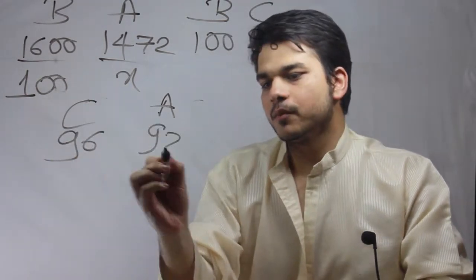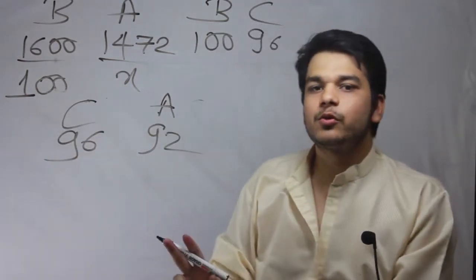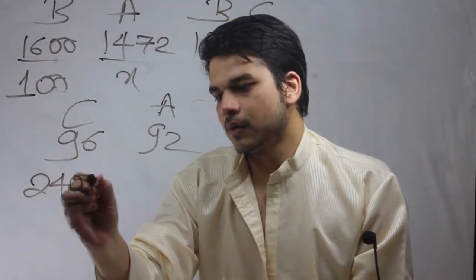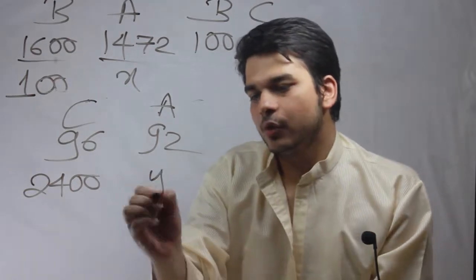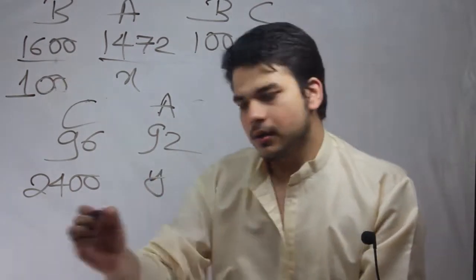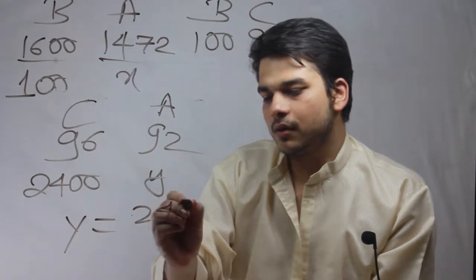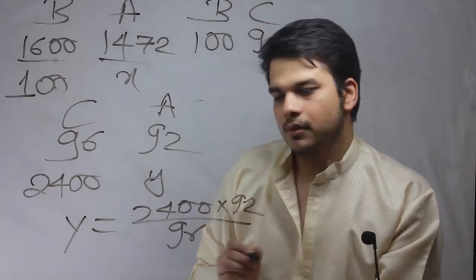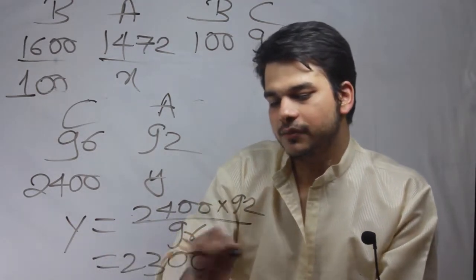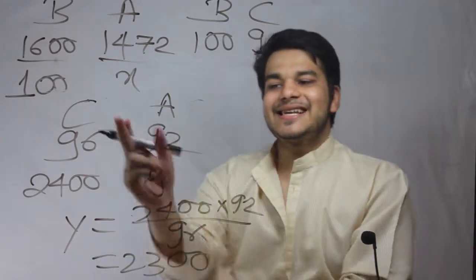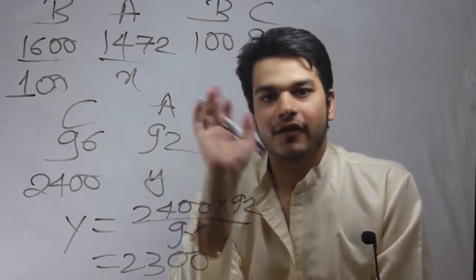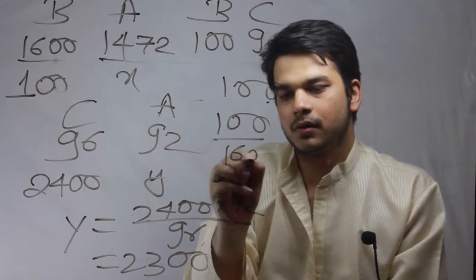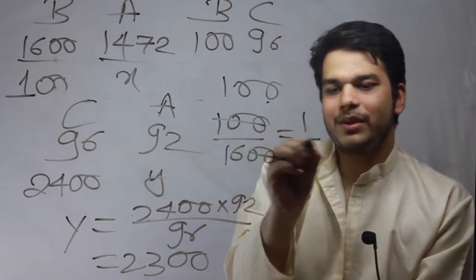So C covers 96 meters and A covers 92 meters. Now they run a race of 1.5 miles, equal to 2400 meters. A's distance will be equal to 2400 into 92 upon 96, which equals 2300 meters. This means C can give A a head start of 100 meters, or 1/16 miles.